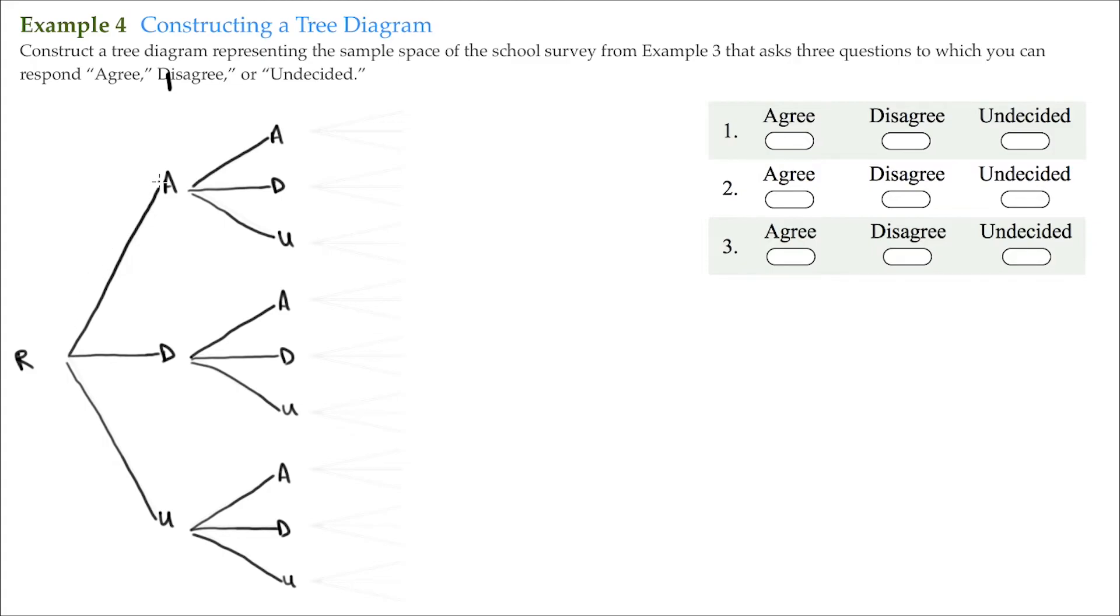So you could see I can agree-agree, agree-disagree, agree-undecided, disagree-agree, disagree-disagree, disagree-undecided. So it's the same idea except we're just using a tree diagram rather than this fancy graphic. So we could go ahead and label this up here number two, this is question two.